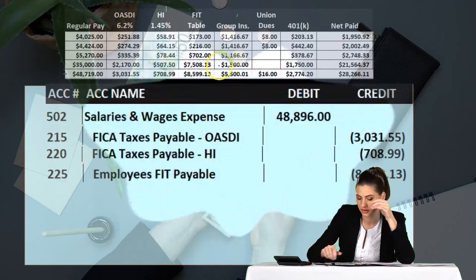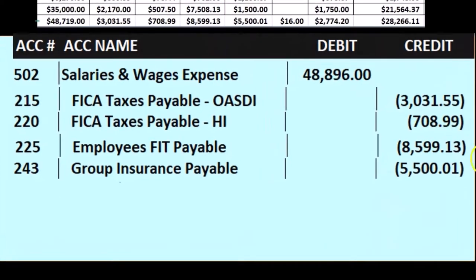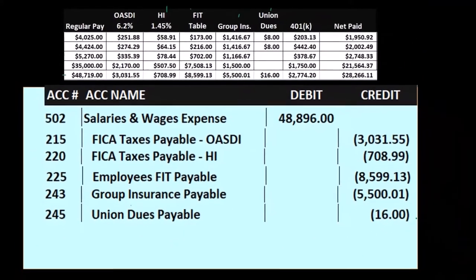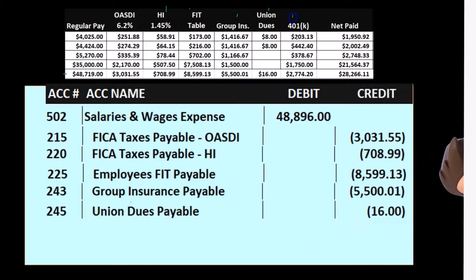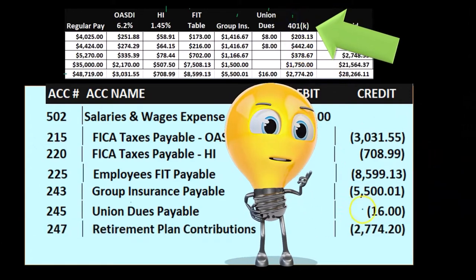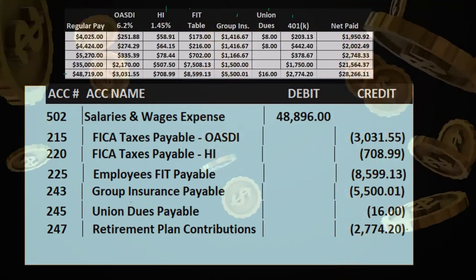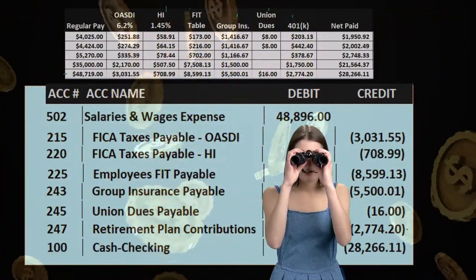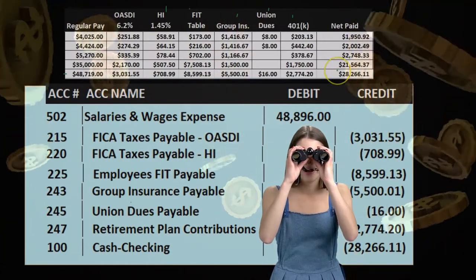Then the HI — $708.99 — a liability, so FICA tax HI increases with a credit. Then FIT at $8,599.13, also a credit. Then group insurance of $5,500, which we're removing collectively for the four employees. Then union dues — we take those out too, credit to the liability since we'll have to pay those to the union. Then the 401k or retirement plan — increasing that liability, which is owed to fund the retirement plan.